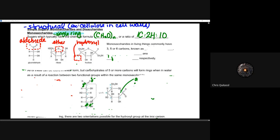Regardless of what carbohydrate we're looking at, it will usually have that ratio of one carbon to two hydrogens to one oxygen. Monosaccharides in living things commonly have about three, five, or six carbons, and it's going to have those prefixes associated with the triose, pentose, and hexose. As long as you can recognize the number of carbons in a monosaccharide, you'll be able to name it.